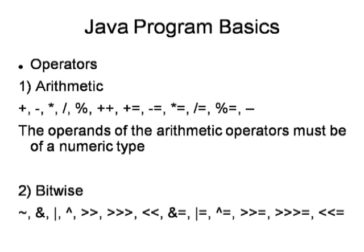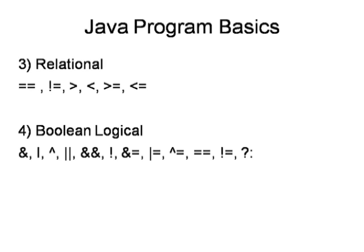There are many operators. The first is arithmetic — plus, minus, and similar symbols. The operands of arithmetic operations must be of numeric type. Bitwise operators are mostly important for hardware embedded engineering software — for gates like NAND, AND, NOR. Relational operators are mostly used in loops. Boolean logical operators are also used in hardware embedded systems and in fuzzy logic and computational logic.